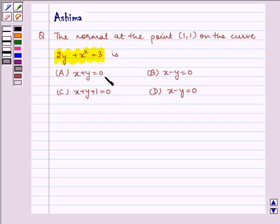Option A: x plus y equals 0. Option B: x minus y equals 0. Option C: x plus y plus 1 equals 0. And option D: x minus y equals 0.